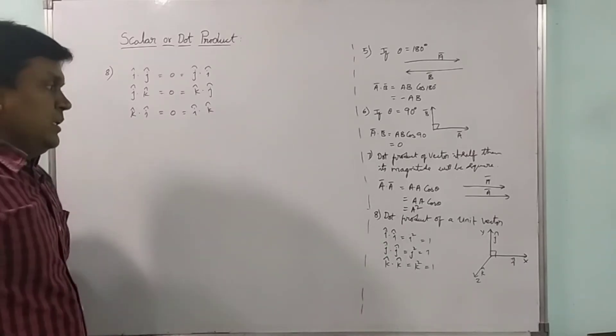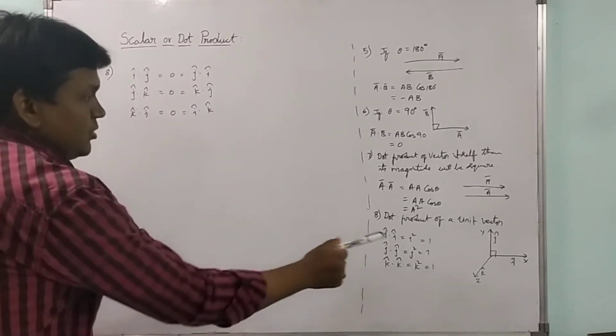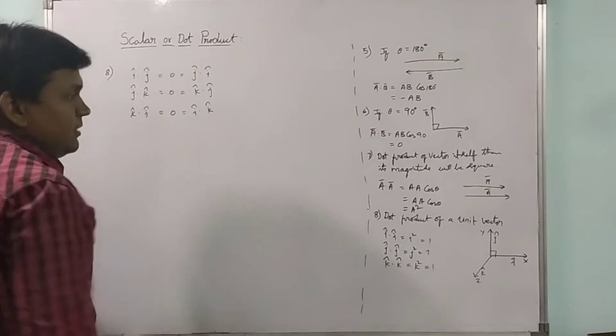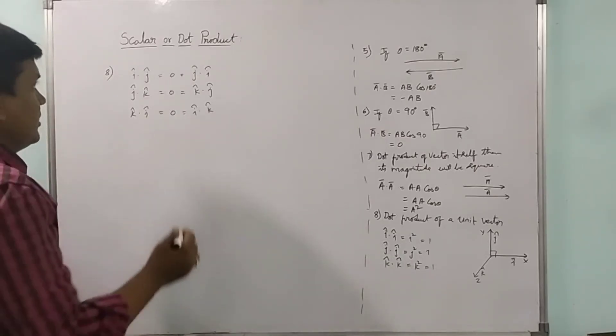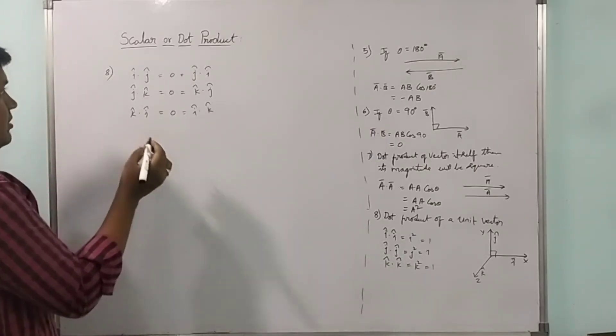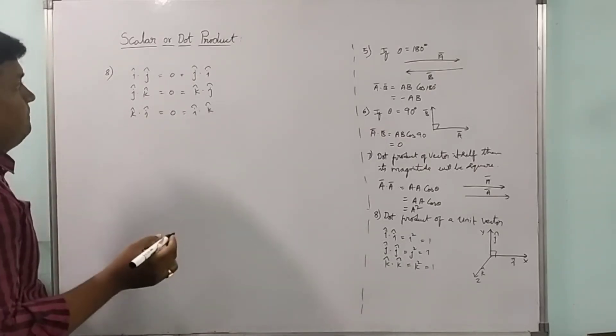So if you take two different unit vectors which are mutually perpendicular to each other, the dot product value will be 0. For example, i-cap dot j-cap equals 0.